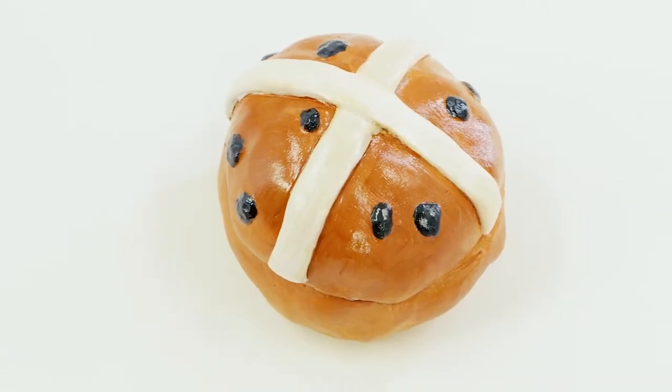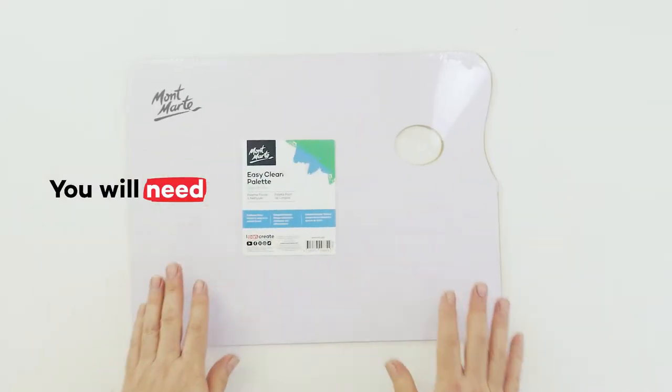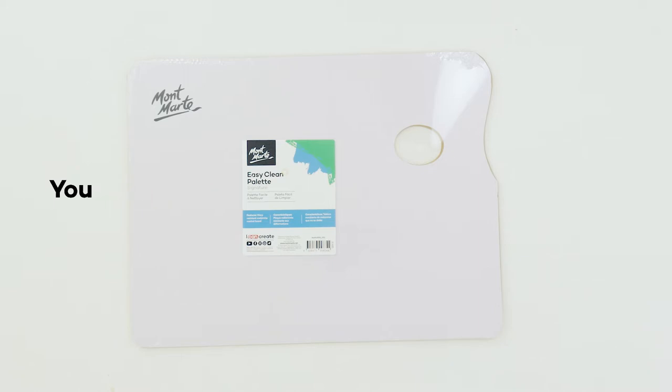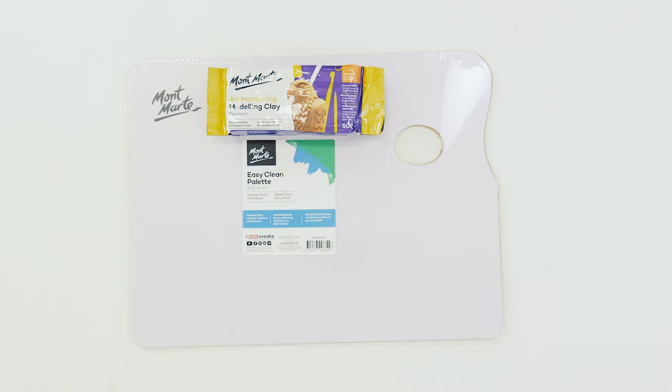For this fun little project we'll need some sort of a work surface. In this case I'll be using an easy clean palette. For clay we'll be using a 500 gram block of terracotta air hardening modelling clay.